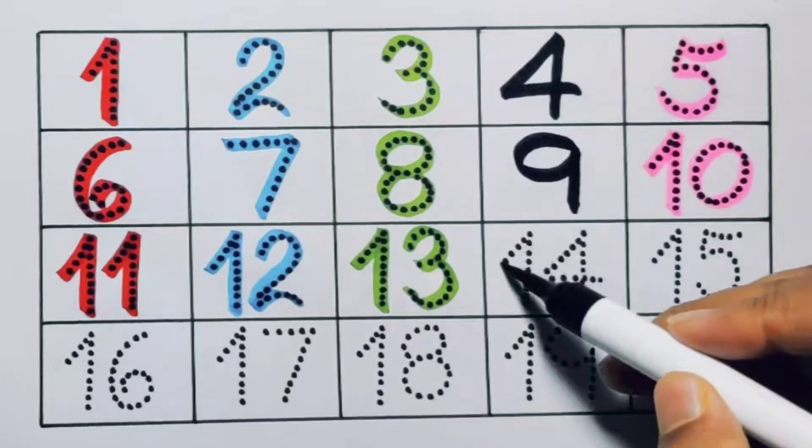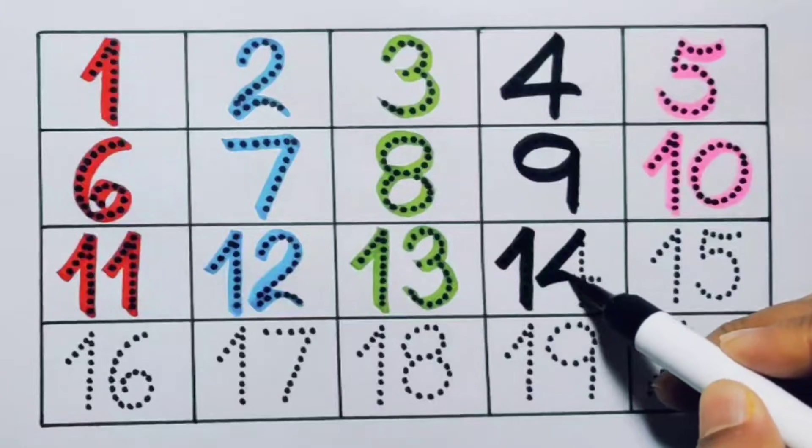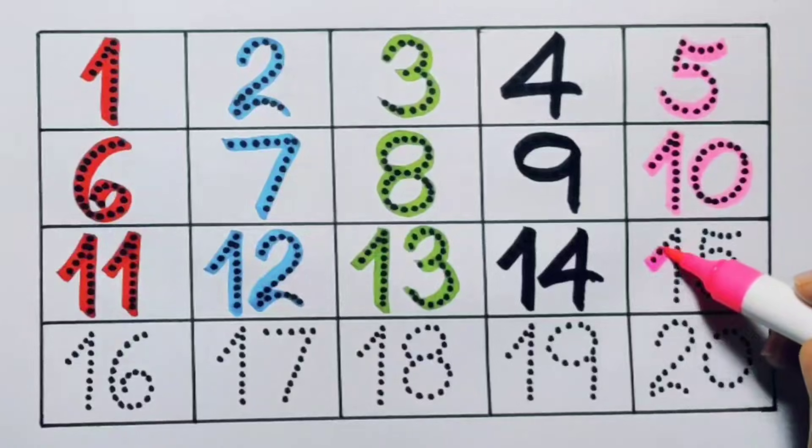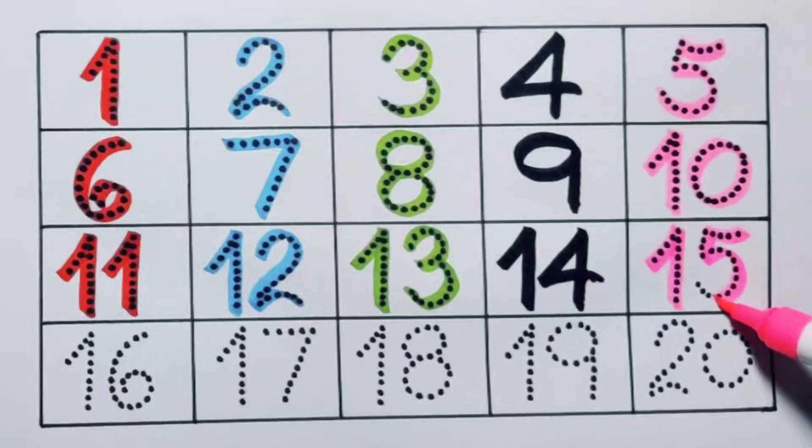Next kids, fourteen, one four, fourteen, number fourteen. Next kids, fifteen, one five, fifteen, number fifteen.